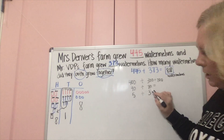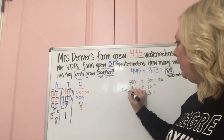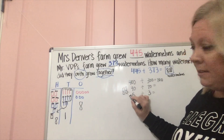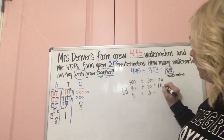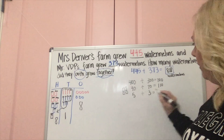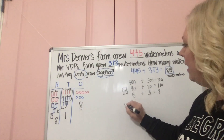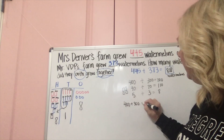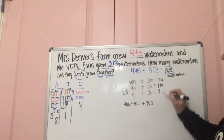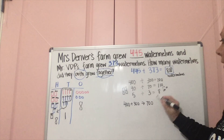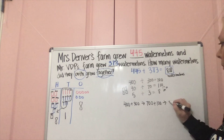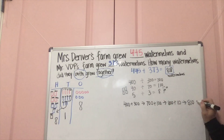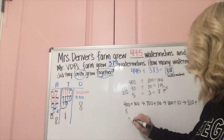400 plus 300 is 700. Now for 40 plus 70 — I can start with the larger number, 70. If I get a little confused I can draw it out: 70, 80, 90, 100 — and since we're counting by 10, that last step is 110. So I've got 110 there. And 5 plus 3 we know is 8. So writing it all together: 400 plus 300 gets me to 700. I break 110 into 100 and 10 — so 700 plus 100 is 800, then 800 plus 10 is 810, and 810 plus 8 is 818.